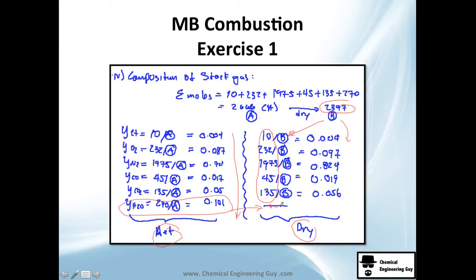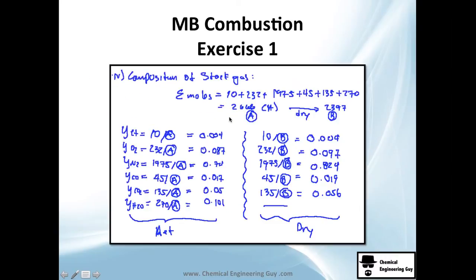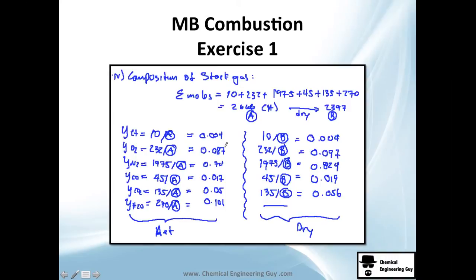Now, what if you forget the nitrogen in the composition? Nitrogen is almost 2,000 moles, so if you take it out, you'll find a completely different composition. For example, O2 composition would be almost 55 percent mole versus only 8 percent with nitrogen included. It's a huge difference, so don't forget to add nitrogen.